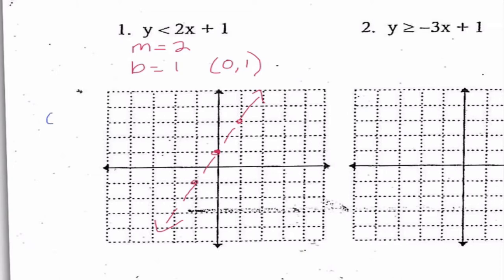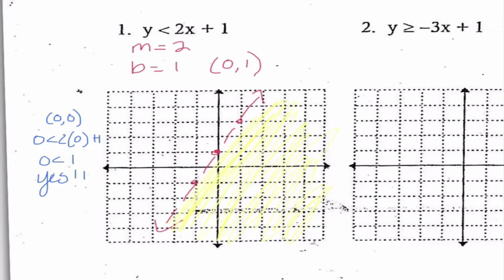I'm going to use (0, 0) as a test point. If I put (0, 0) in, I get 0 is less than 2 times 0 plus 1. Is 0 less than 1? Yes. So that means I'm going to shade everything on the side of (0, 0). Everything in the shaded region is a solution to this particular inequality. I could choose any of these ordered pairs and substitute them in.